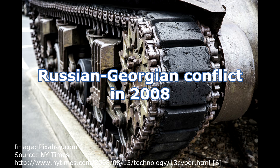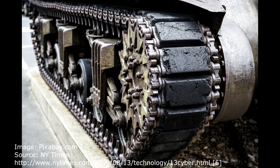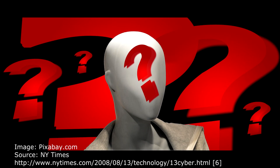In 2008, there was a conflict between Russia and Georgia. It included DDoS attacks on Georgian government websites, diverting or blocking internet traffic. The Russian government denied allegations and stated the possibility that individuals from Russia started the attacks.